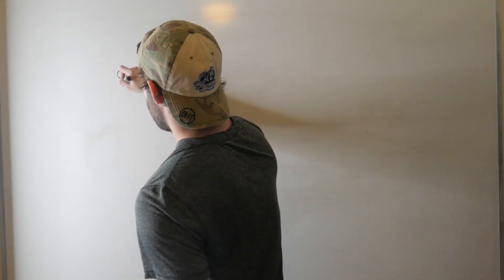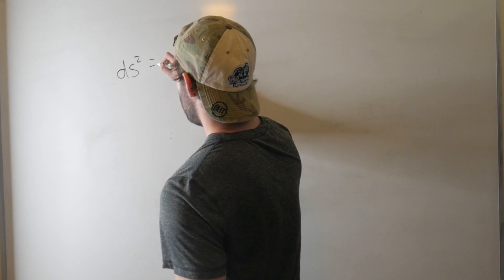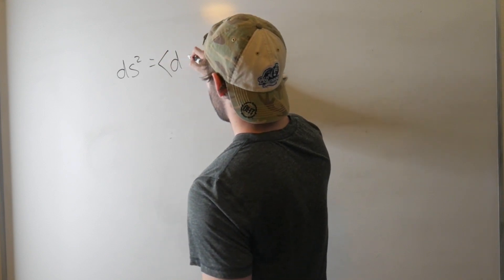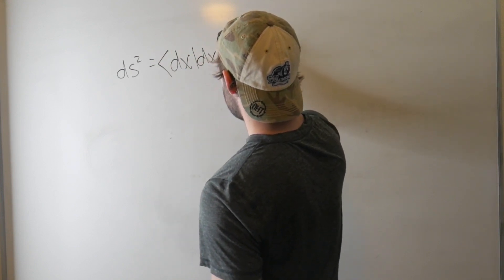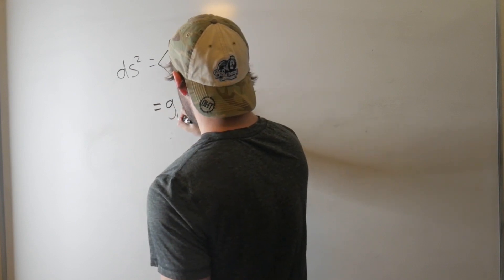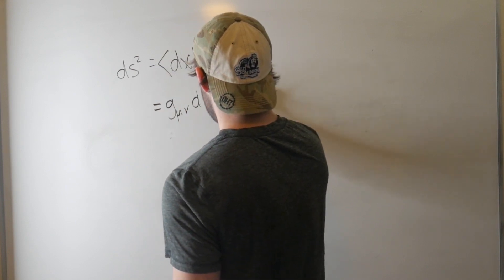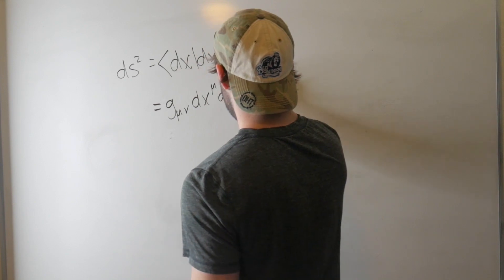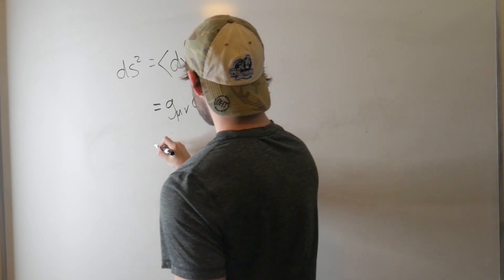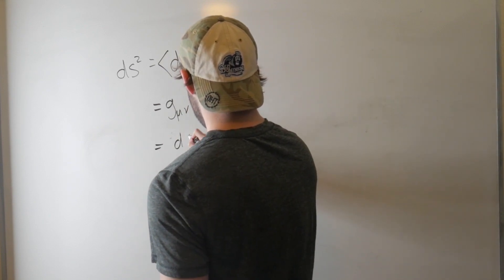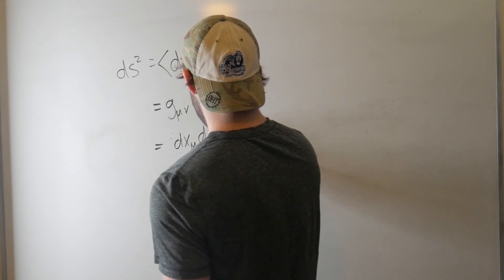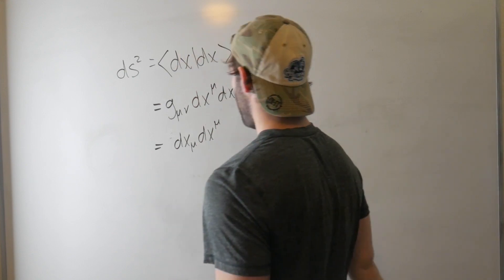But now I want to actually revisit Bra-ket notation because we can express our invariant space-time interval in terms of it. So we can write ds² equal to, in Dirac Bra-ket notation, <dx|dx>. And now we know that this is equal to g_μν dx^μ dx^ν, which is equal to <dx_μ|dx^μ>. Awesome.